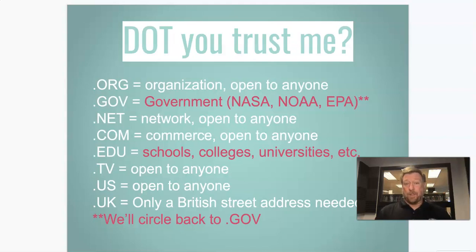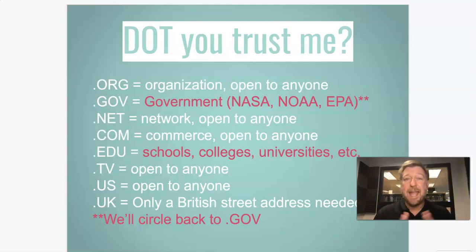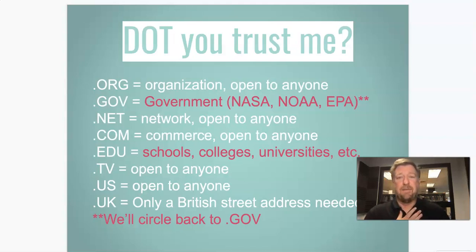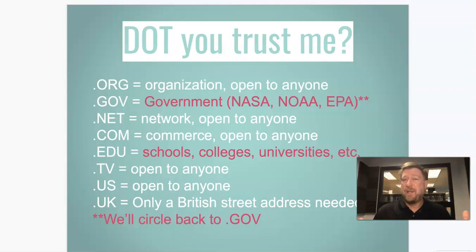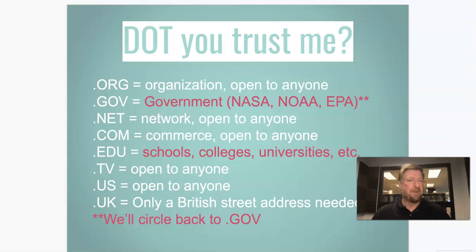So .org is an organization. .net, .com, .tv, .us, .uk — all of those anybody can get. I could go out and create biology.tv. It's probably already taken, but if not, I could create biology.tv, but I would not be a very authoritative source for a biology website because I just don't know that much. That's not my background — I skipped biology in high school, to be honest.